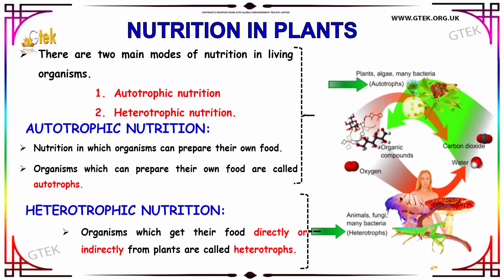Now we are going to see the main modes of nutrition. There are two main modes: the first is autotrophic nutrition and the second is heterotrophic nutrition. Autotrophic nutrition is the nutrition in which organisms can prepare their own food. The organisms which can prepare their own food are called autotrophs.